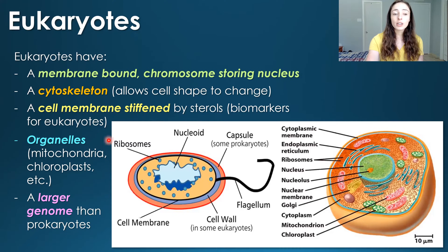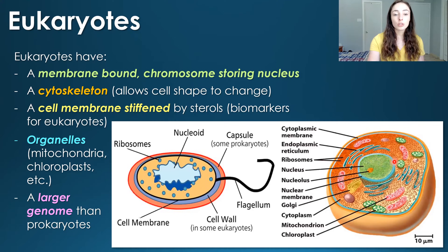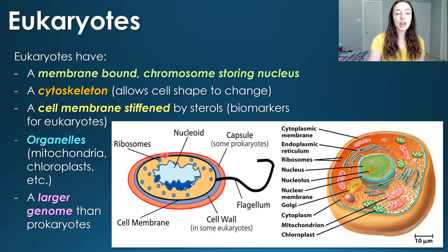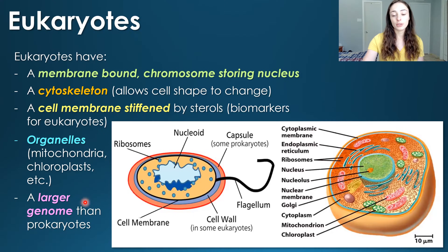Eukaryotes also have organelles like mitochondria and chloroplasts, which are not present in prokaryotes — only in eukaryotic cells. And they also have a larger genome than prokaryotes.